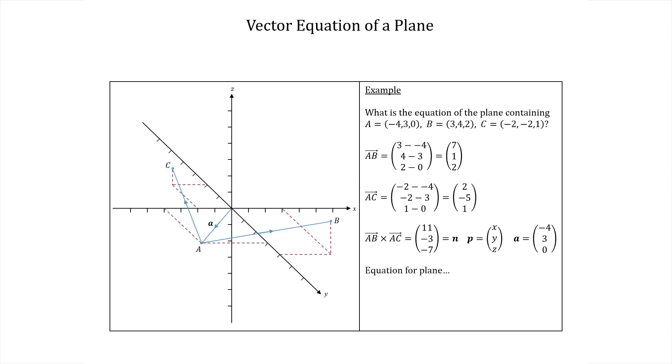The equation is of course p·n = a·n from earlier. Plugging in what we have we get 11x - 3y - 7z = -4 × 11 which is -44 plus -3 × 3 which is -9 plus -7 × 0 which is 0 so we'll ignore it.